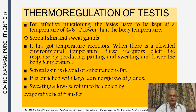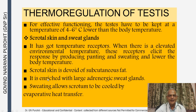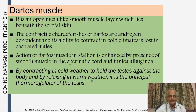For effective functioning, the testes must be kept at 4 to 6 degrees lower than body temperature. Thermoregulation is achieved through several mechanisms. The scrotal skin has temperature receptors; at elevated environmental temperatures, these elicit responses including panting and sweating to lower testicular temperature. The scrotal skin is devoid of subcutaneous fat and is enriched with large adrenergic sweat glands, allowing cooling by evaporative heat transfer. The dartos muscle is an open mesh-like smooth muscle layer beneath the scrotal skin; its contractile characteristics are androgen-dependent and its ability to contract in cold climates is lost in castrated males.